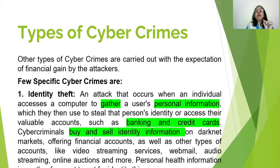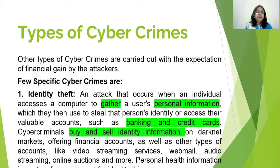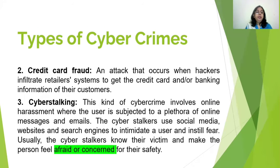Now, coming towards the types of cybercrimes. The first is identity theft — an attack that occurs when an individual accesses a computer to gather a user's personal information, which they then use to steal that person's identity or access their valuable accounts, such as banking and credit cards. Cybercriminals buy and sell identity information on darknet markets, offering financial accounts as well as other types of accounts like video streaming services, webmail, audio streaming, and online auctions. Personal health information is also a frequent target for identity thieves.